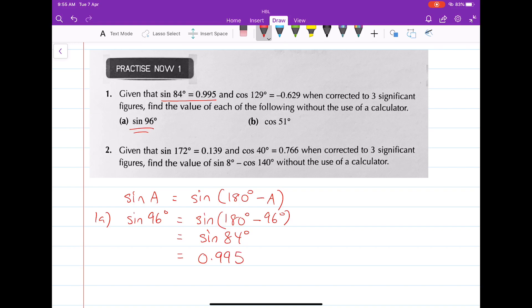Now let's try cosine. For part B, you're supposed to find the cosine of 51 degrees. Now let's have a look at the formula again. Cosine of A is equals to the negative of the cosine of A subtracted from 180 degrees. So let's have a look at this one.